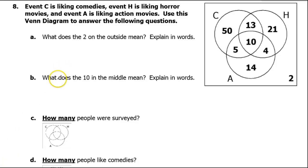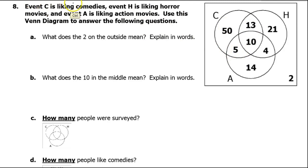In this video, we are going to calculate the size and probability of events based on this three-circle Venn diagram. Event C is liking comedies, event H is liking horror movies, and event A is liking action movies. Use this Venn diagram to answer the following questions.